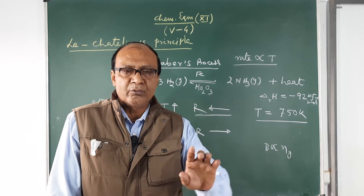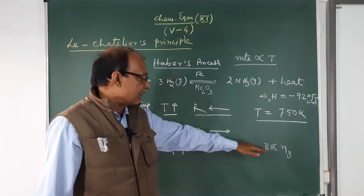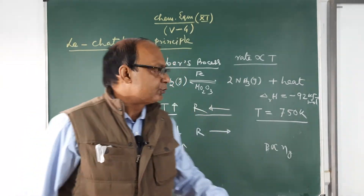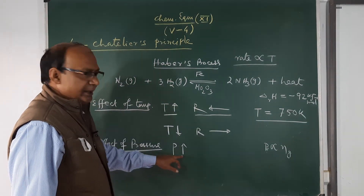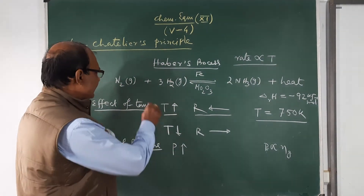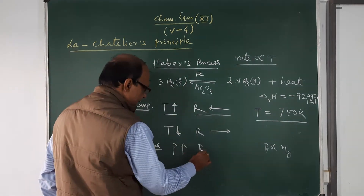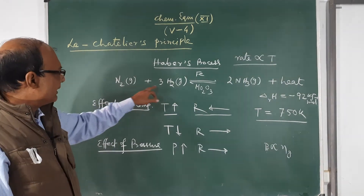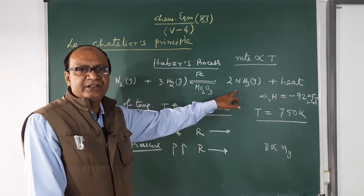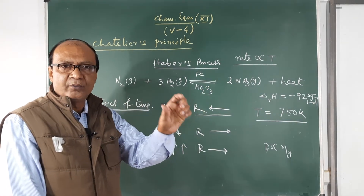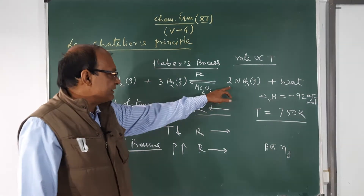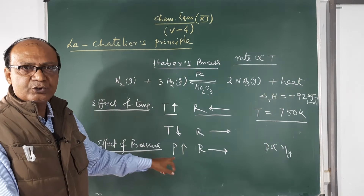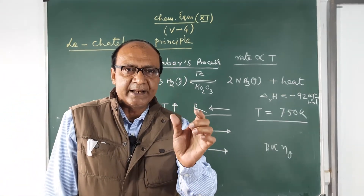The equilibrium moves to the direction at which the number of moles is lesser. By making the number of moles less, it can adjust and relieve the stress of pressure. So if you increase the pressure after equilibrium, the reaction favors the forward direction — moving to the side with fewer moles of gas — in order to overcome the applied pressure. This means more ammonia can be obtained under high pressure.